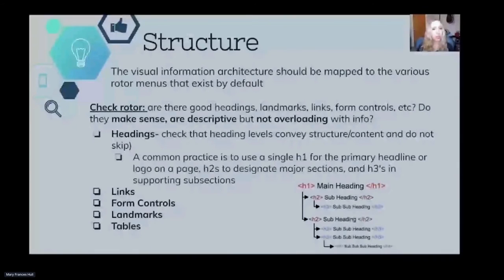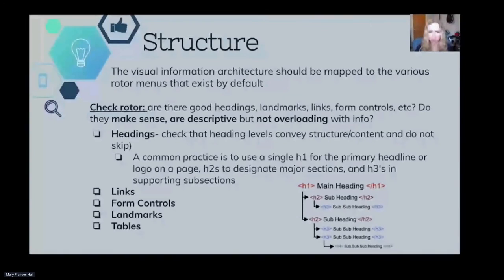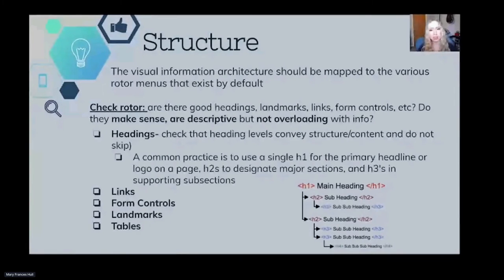The visual information architecture should be mapped to the various rotor menus that exist by default. Screen readers can navigate the page through different means, so we should make sure that the structure of our page maps out to headings, landmarks, links, form controls, etc. They should make sense and be descriptive, but not overloading with information. Headings should convey structured content and shouldn't skip levels. A common practice is to use a single H1 for the primary headline or logo on a page, H2s to designate major sections, and H3s for supporting subsections. It's also important to check your links and form controls to make sure they have good labels.